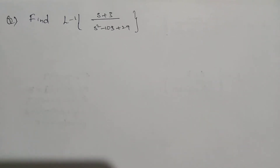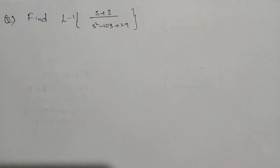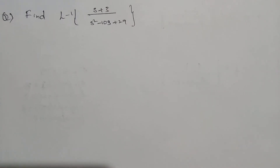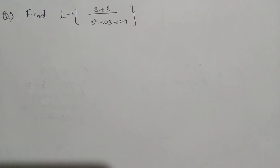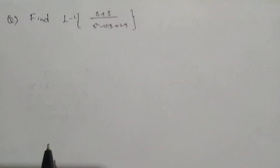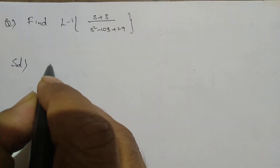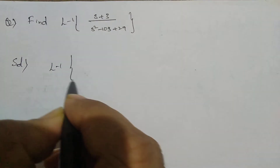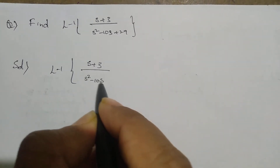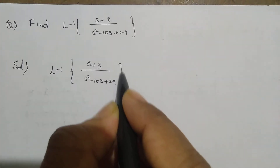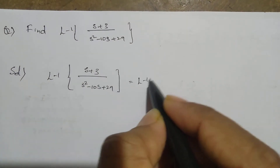Good morning students. Now we are going to solve the problem: L inverse of (s plus 3) divided by (s squared minus 10s plus 29). To solve this problem, first of all you have to write the solution like this: L inverse of (s plus 3) by (s squared minus 10s plus 29).